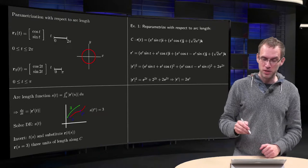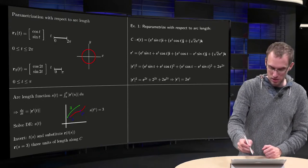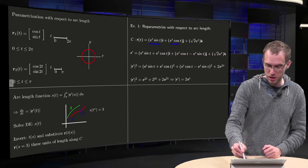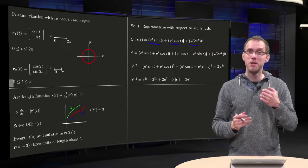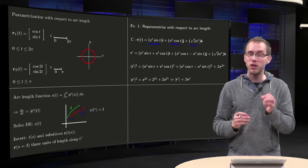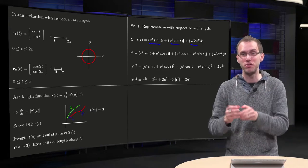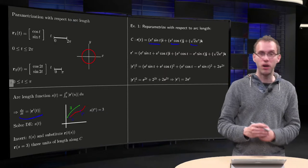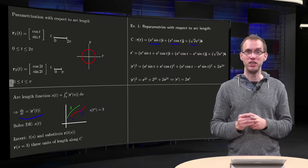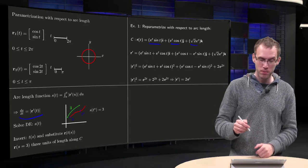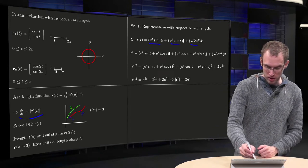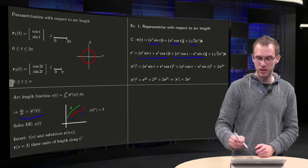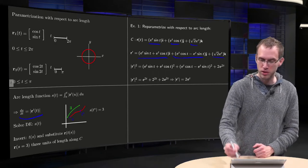Here is an example: reparameterization with arc length for the curve e^(sin t), e^(cos t), and √2 · e^t. First you have to find S as a function of t by solving the differential equation, for which you need r′. So differentiate e^(sin t), differentiate e^(cos t), and differentiate √2 · e^t.